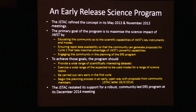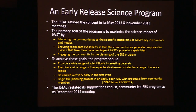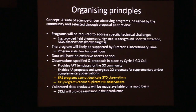The JSTAC refined the ERS concept: the goal is to maximize science impact by educating the community about science capabilities, ensuring rapid data availability so the community can generate proposals for cycle two, and engaging the community in planning those programs. The program has to cover a wide range of scientifically interesting topics, exercise a wide range of the expected-to-be-used modes, and be carried out early in the cycle. The organizing principle is: put together a set of science-driven observing programs designed by the community and selected through proposal peer review.